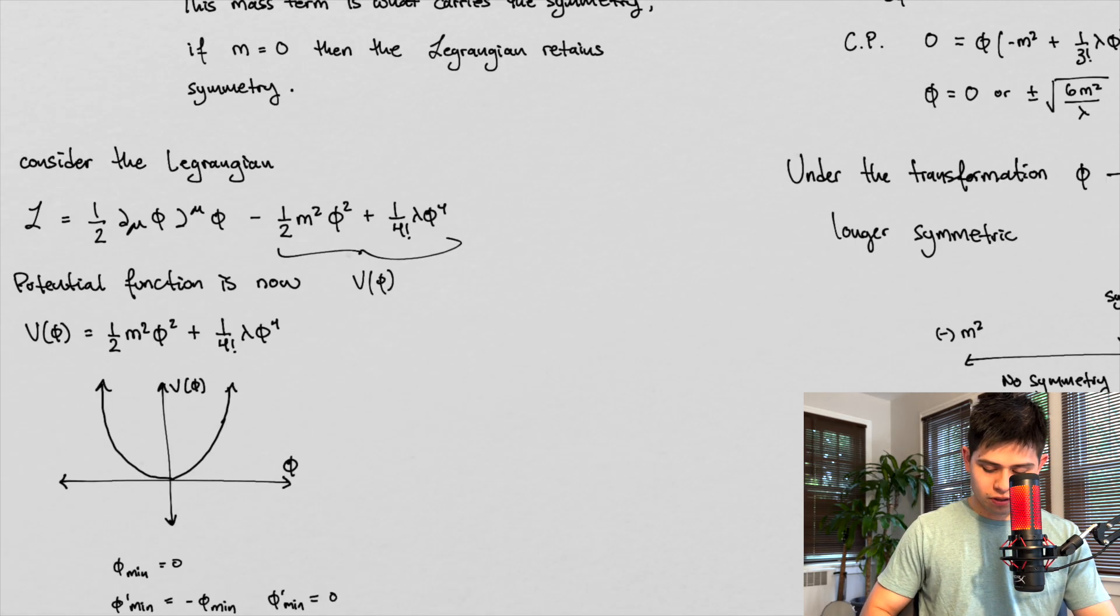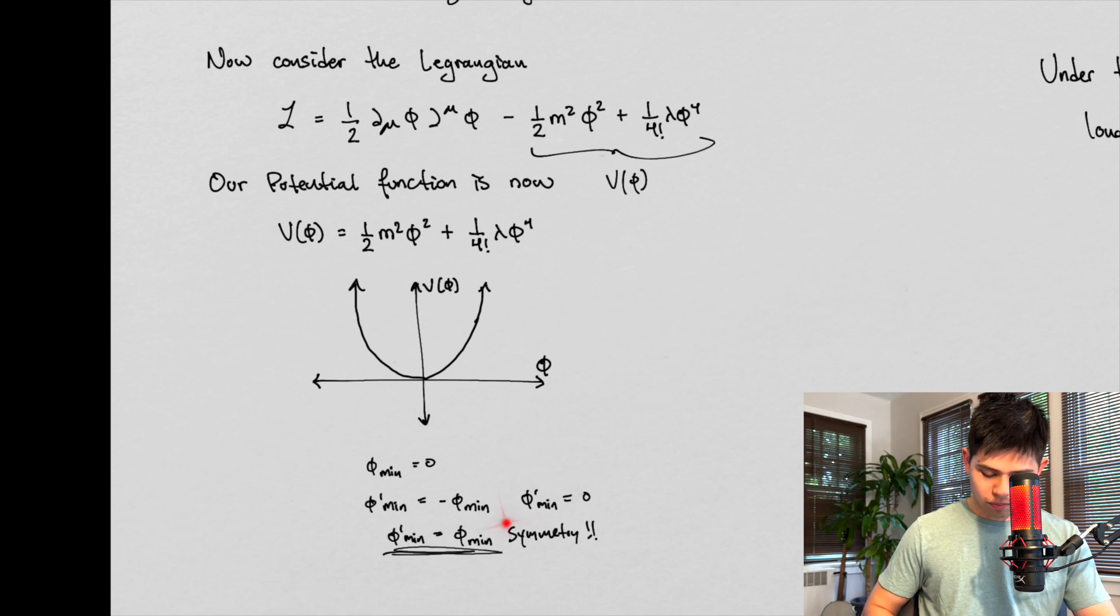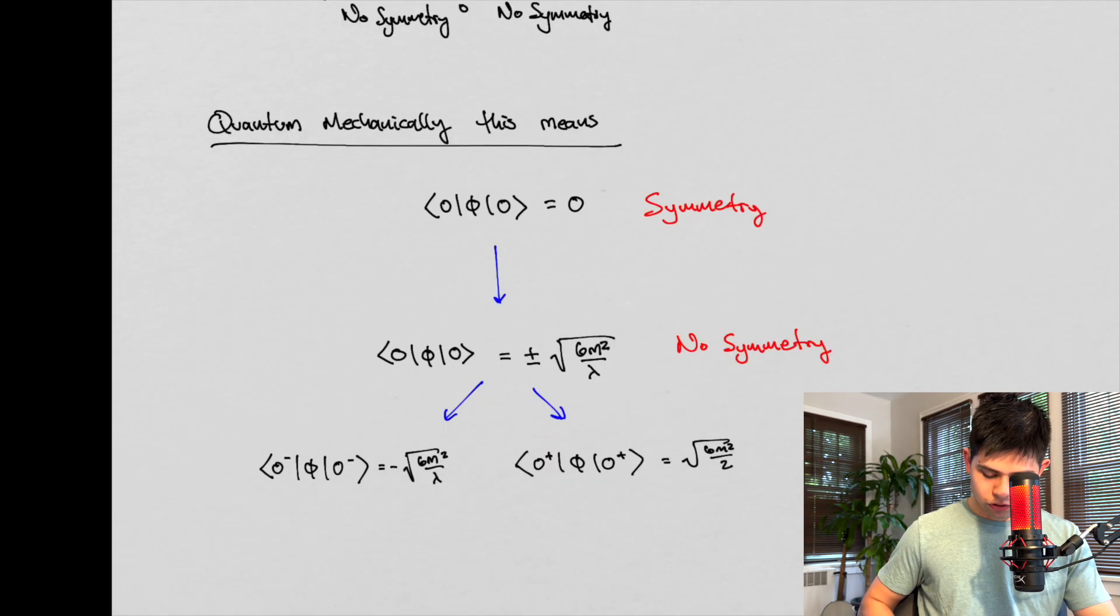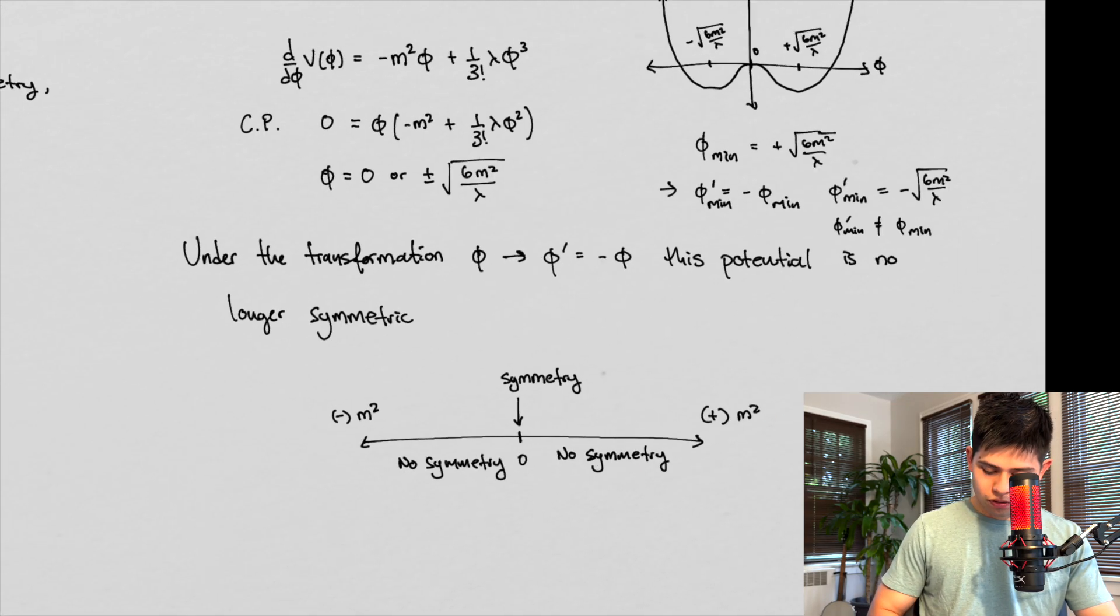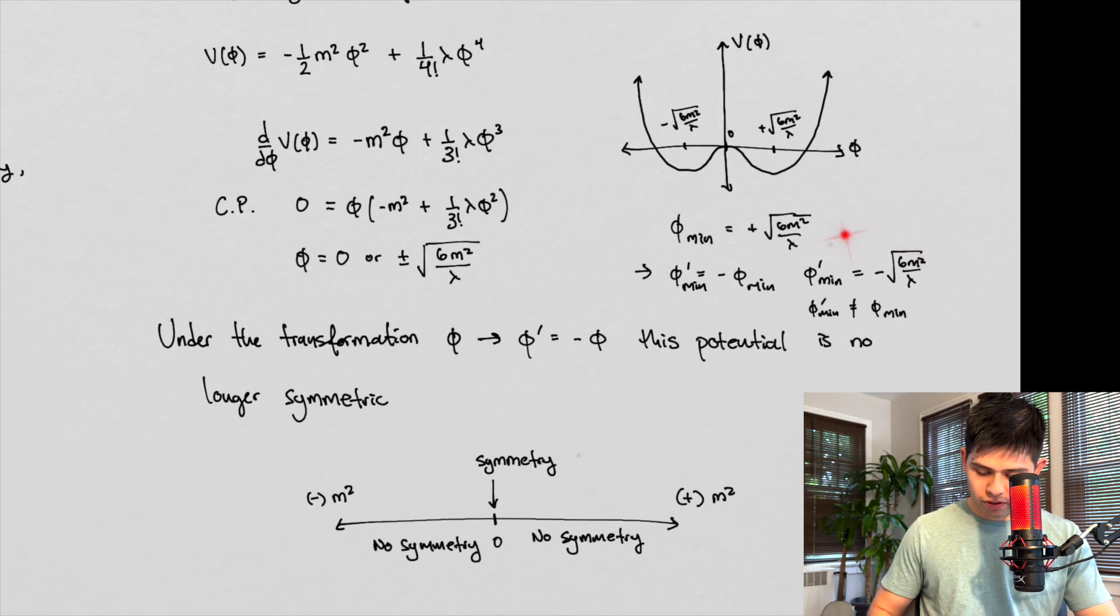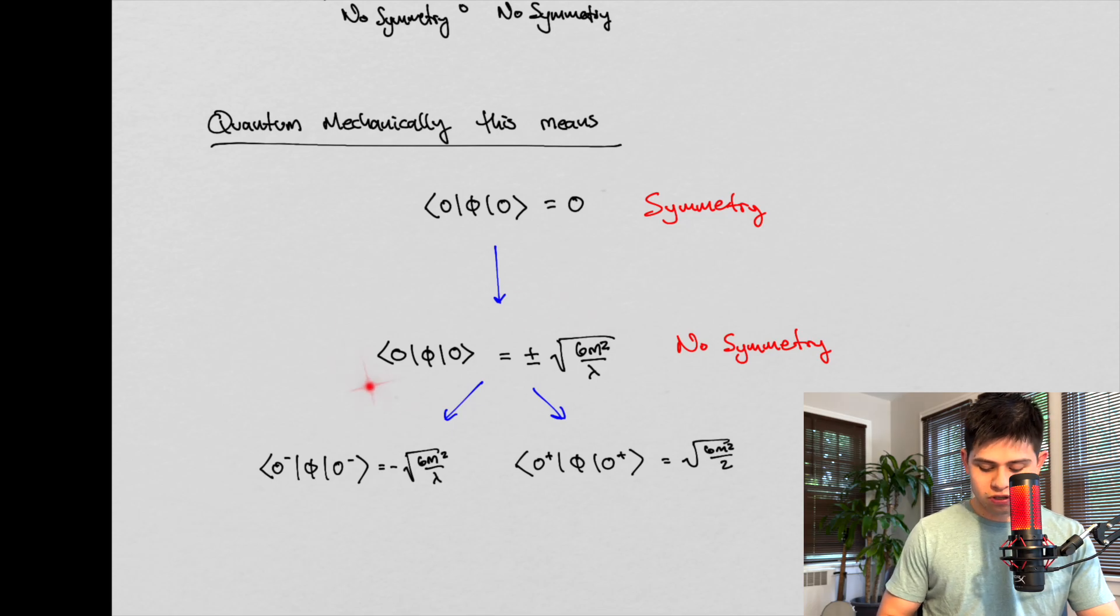we actually go from one minima. Right? We went from one minima, from one minima to two minima. Right? That's these two guys right here. We actually have two ground states now. Right?